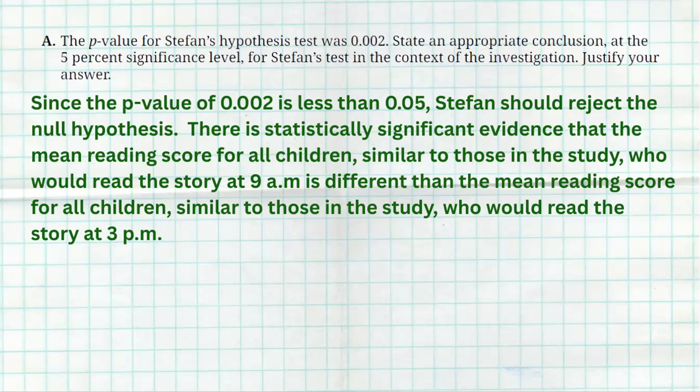The p-value in part A is given to us as 0.002, so they did all the work for us. All they want us to do is state a conclusion at the 5% level. Since the p-value of 0.002 is less than 0.05, Stefan should reject the null hypothesis. There is statistically significant evidence that the mean reading score for all children similar to those in the study who read at 9 a.m. is different from the mean reading score for those who read at 3 p.m. Note that with a low p-value you reject the null, and make sure you include context — I literally copied the sentence from the problem — because they used 100 volunteers, so you can't say this applies to all children.